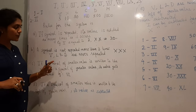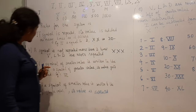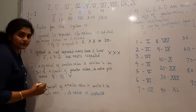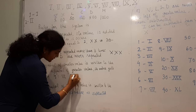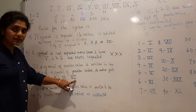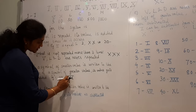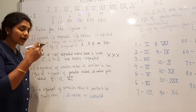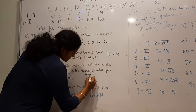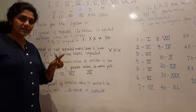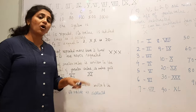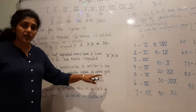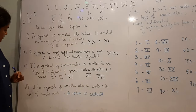Rule number 3: if a symbol of smaller value is written to the right of a symbol of greater value, its value gets added. For example, V followed by I is 5 plus 1, which equals 6. Similarly, X followed by I is 10 plus 1, which equals 11. Writing X followed by II gives 10 plus 2, which equals 12. All the symbols to the right will be added.